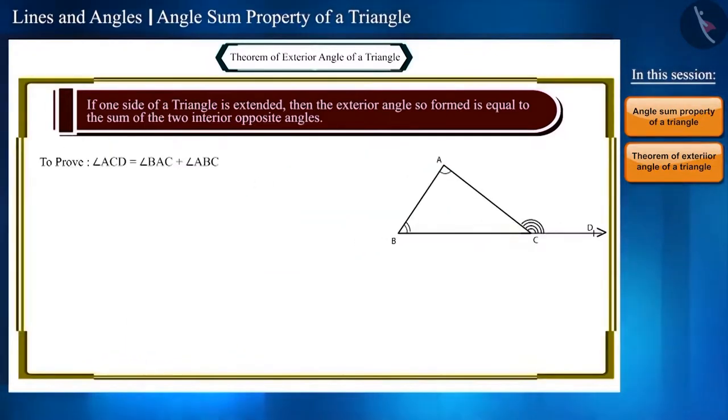Friends, this is quite easy. Here, BCD is a line and angle ACB and angle ACD are linear pair angles. That is, we can say that angle ACB plus angle ACD equals 180 degrees. Let us call this equation 1.